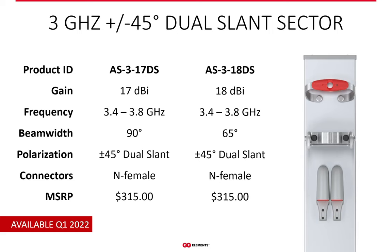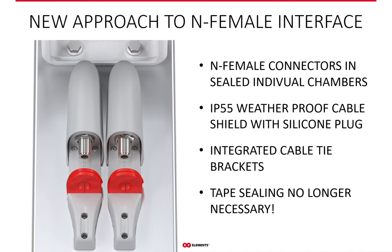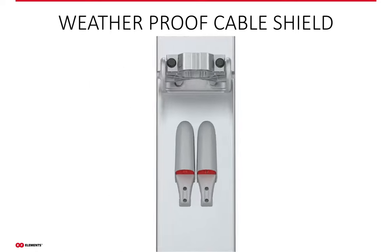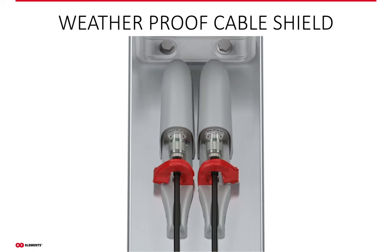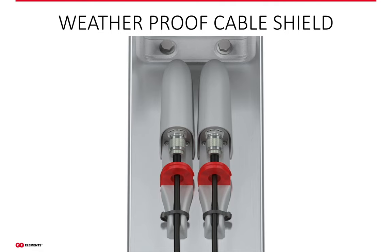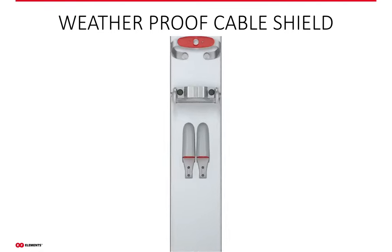The new 3 GHz array sector antennas have 17 and 18 dBi gain with beam widths of 90 and 65 degrees. They both have dual slant polarization and N female connector radio interface and will be available in the first quarter of 2022. Both 3 GHz array sectors with dual slant polarization feature innovative covers for connector interface protection — an integrated sliding cover with a silicon plug ensures IP55 weatherproofing, and the cable tie bracket makes sure cables will not move. The cables are in a neutral position with no strain, and the combination of the sliding cover and silicon plug ensure impeccable weather resistance.